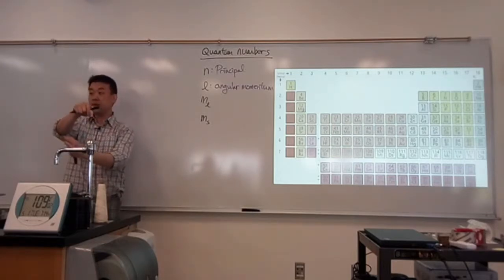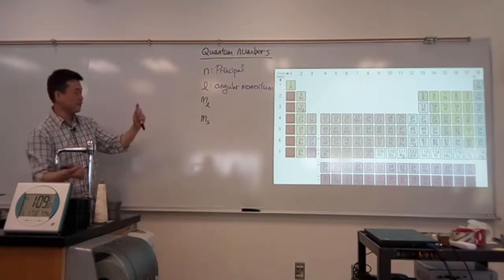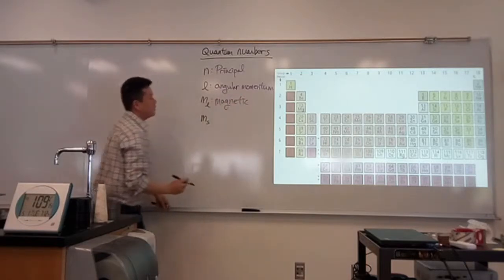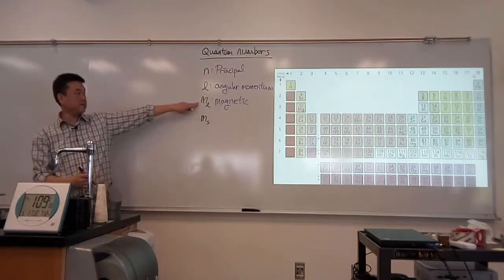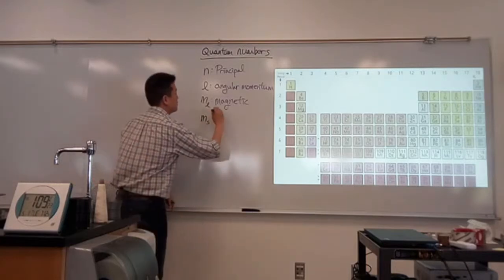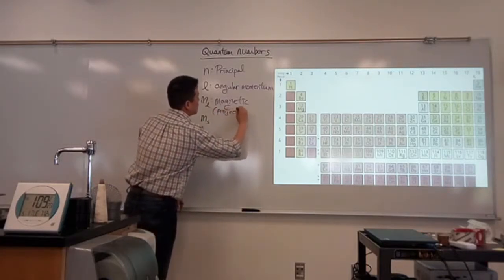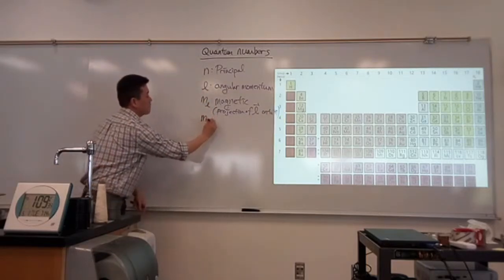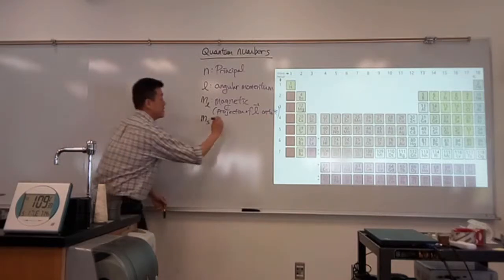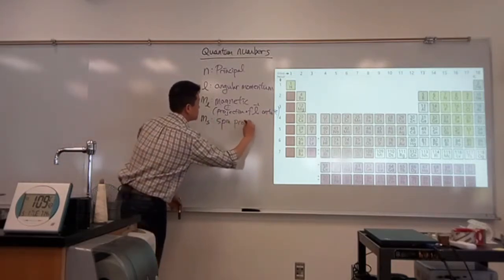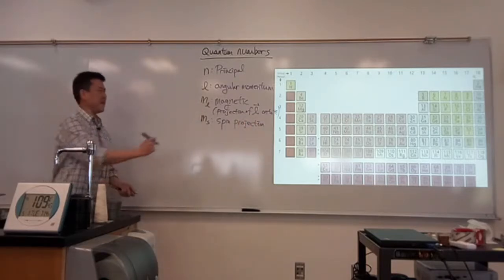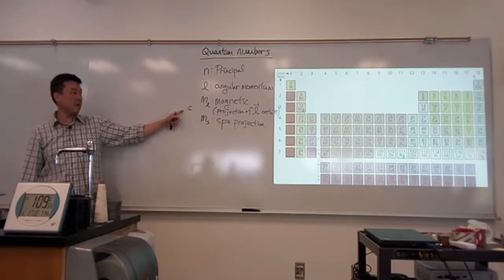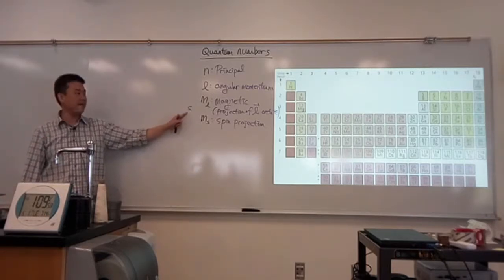If you have high N but small L, think of it like an elliptical orbit — large energy but small angular momentum. M sub L is the magnetic quantum number; physically it corresponds to the projection of orbital angular momentum L onto the Z-axis. And M sub S is the spin projection.